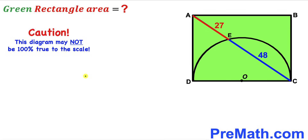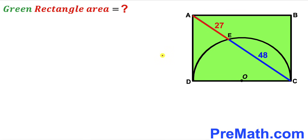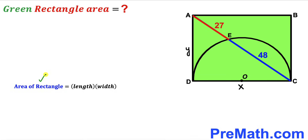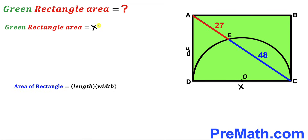Please keep in mind that this figure may not be 100% true to scale. Let's get started. Focusing on the green shaded rectangle ABCD, I'm going to label side AD as Y and side CD as X. Since we want the area of the rectangle, we recall that area equals length times width, so the area equals X times Y.